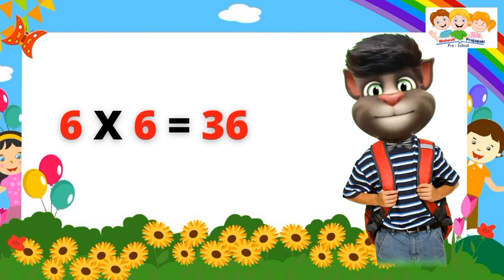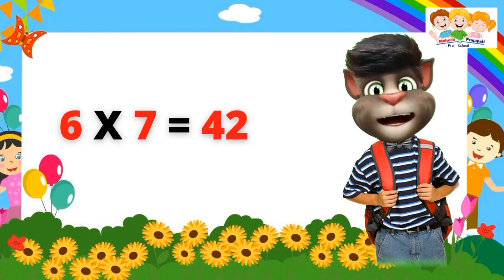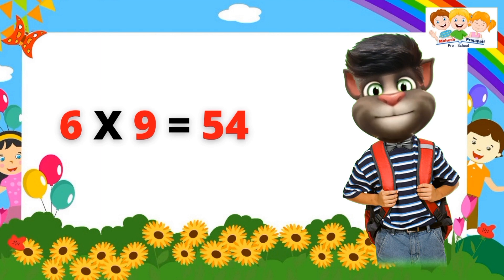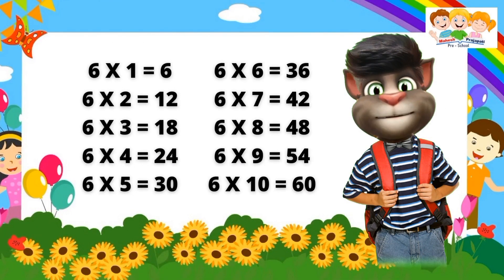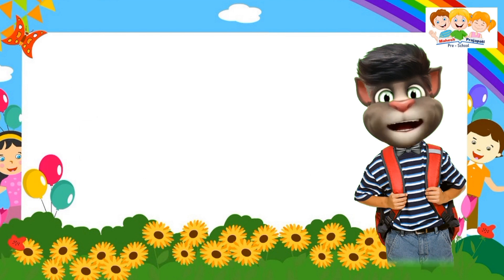Six six's are thirty-six. Six seven's are forty-two. Six eight's are forty-eight. Six nine's are fifty-four. Six ten's are sixty. Six one's are six. Six two's are twelve. Six three's are eighteen. Six four's are twenty-four. Six five's are thirty. Six six's are thirty-six. Six seven's are forty-two. Six eight's are forty-eight. Six nine's are fifty-four. Six ten's are sixty.